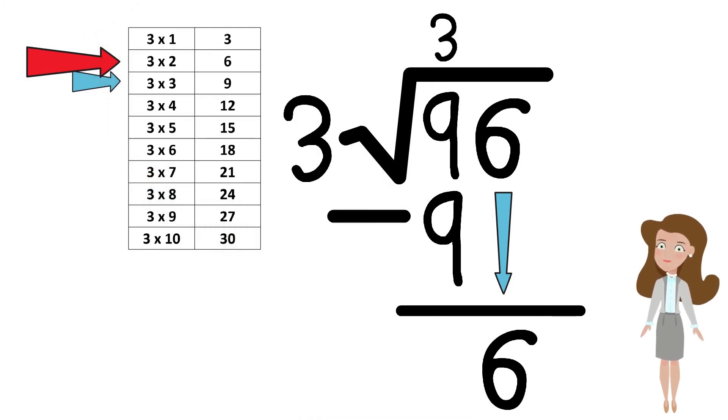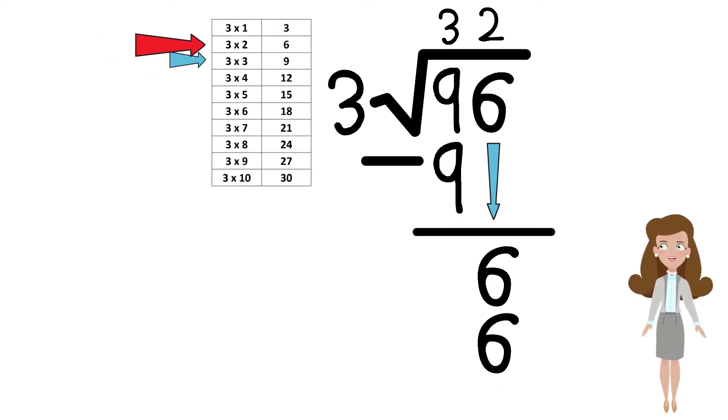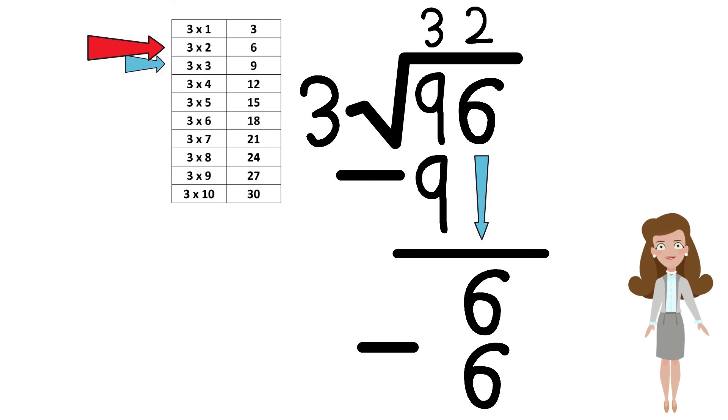Let's write 2 on top and the result of 6 below. Perform the subtraction and write the result of 0.